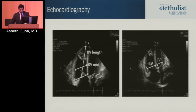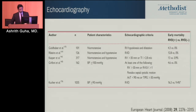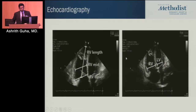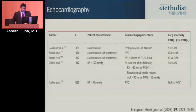About two to three studies have looked at TR velocity giving a systolic PA pressure over 40 as a poor prognostic characteristic. This is mostly in normotensive patients. Looking at RV hypokinesis, RV dilatation, and RV basilar or mid-dimension over 30 millimeters — this has been shown to be a poor prognostic characteristic in these patients.